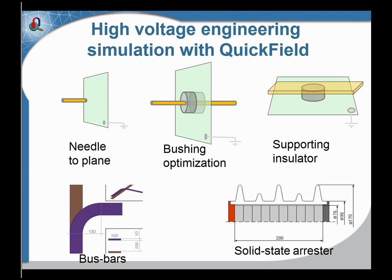Now let's see how Alex is dealing with high-voltage engineering simulations in his live presentations. Today we will review several cases which are typical for high-voltage applications. The first case is a needle-to-plate configuration. The plate is grounded and the needle is at high-voltage potential, and we will estimate the electric field stress distribution in this case. The second case is a bushing, where the high-voltage conductor passes through a grounded metal wall and is insulated by the bushing. We will optimize the bushing design. Those would be two-dimensional electrostatic problems.